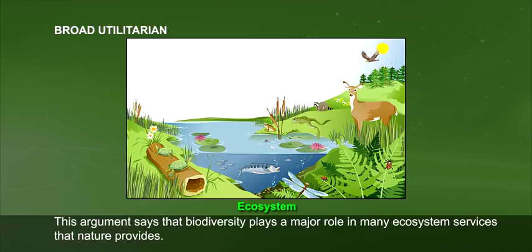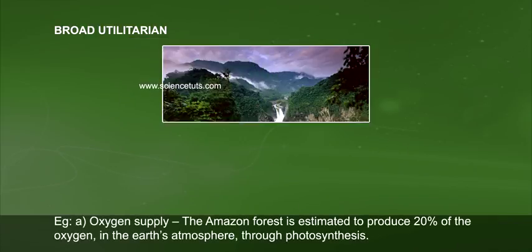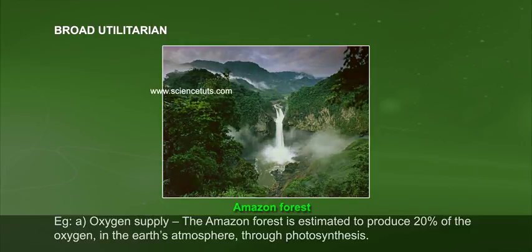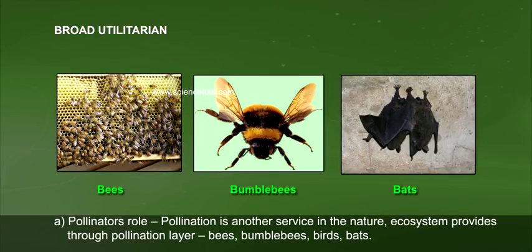Broad utilitarian: This argument says that biodiversity plays a major role in many ecosystem services that nature provides. For example, oxygen supply: the Amazon forest is estimated to produce 20% of the oxygen in the earth's atmosphere through photosynthesis.